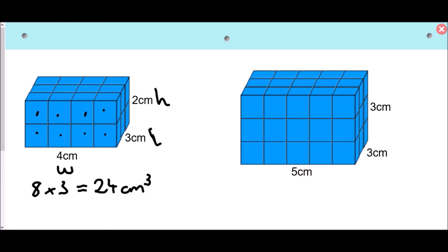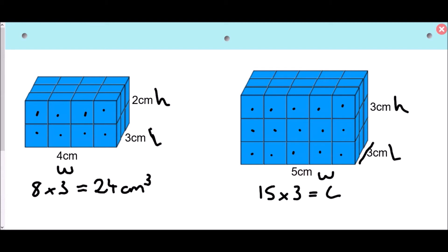That front face has eight cubes and there are three layers, so eight times three gives us 24 centimeter cubed. For the second shape — width of five, length of three, height of three — the front face has fifteen cubes, and with three layers along the length, fifteen times three gives 45 centimeters cubed.